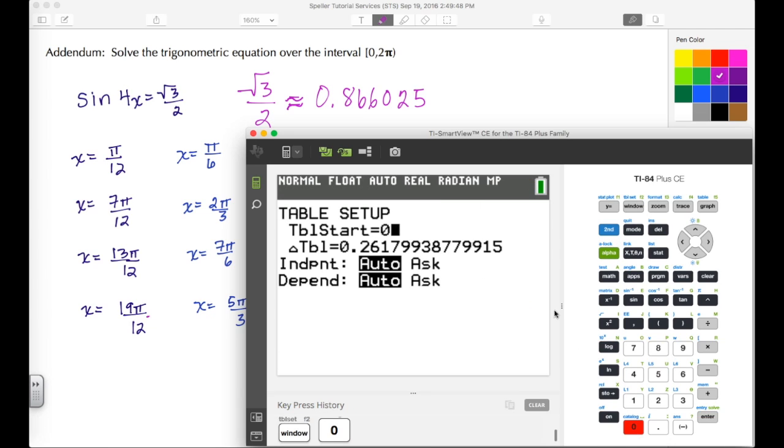Let's make our starting value zero and clear this part out. Since these are multiples of π/12, we're going to set our delta to be π/12, so 2nd π divided by 12, enter. Then let's take a look at the table.